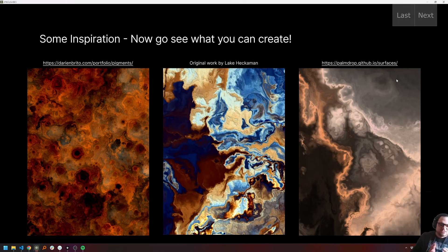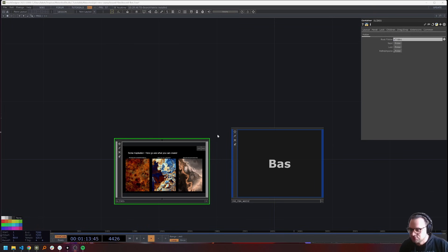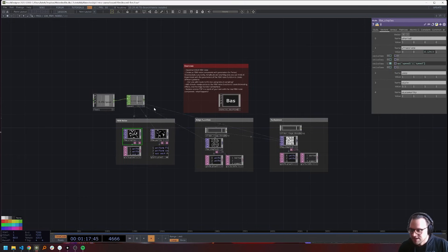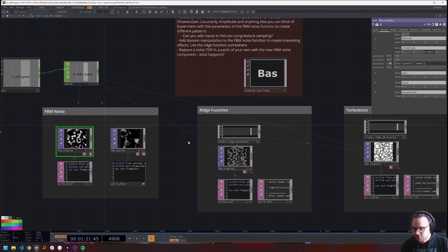All right, so that is everything for our slides. So from here, we're jumping into touch designer. Again, we'll look at implementing FBM with Perlin noise and simplex noise. And then we'll also look at applying the ridge function and the turbulence function.